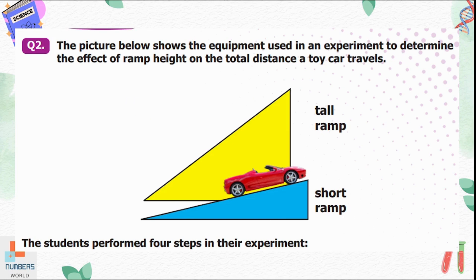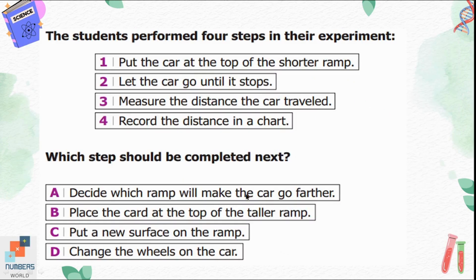Question number two: the picture below shows equipment used in an experiment to determine the effect of ramp height on the total distance a toy car travels. There is a short ramp and a tall ramp. The students perform four steps: first, put the car at the top of the shorter ramp; let the car go until it stops; measure the distance the car traveled; and record the distance in a chart. Which step should be completed next?